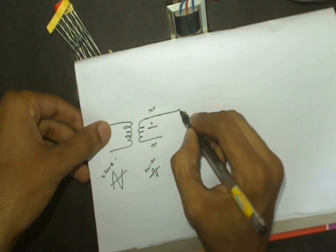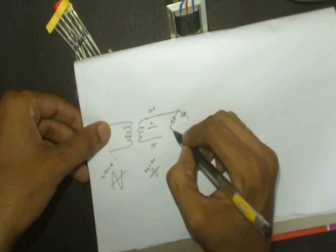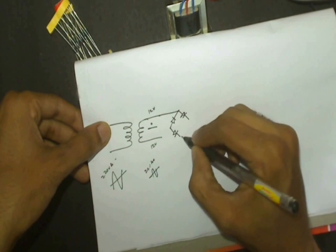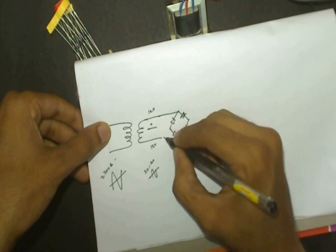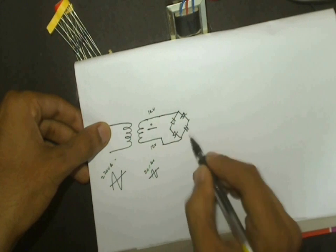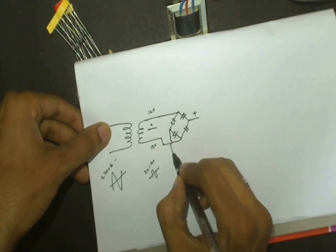The output is connected to a bridge rectifier which can be constructed using simple diodes. The output of the bridge rectifier is a DC voltage.